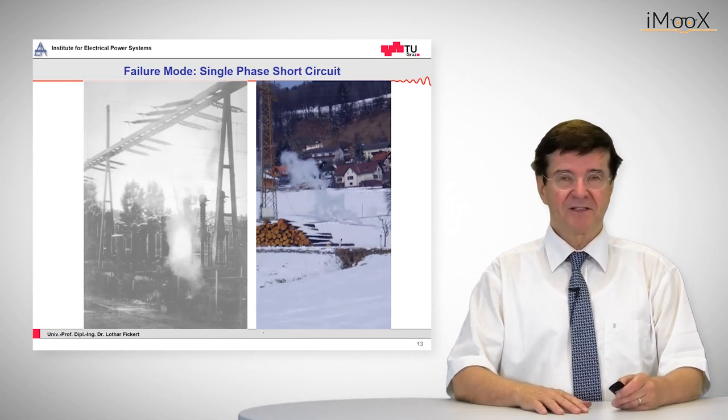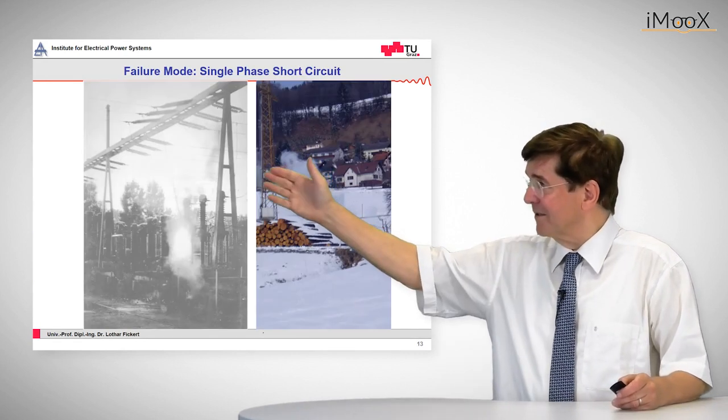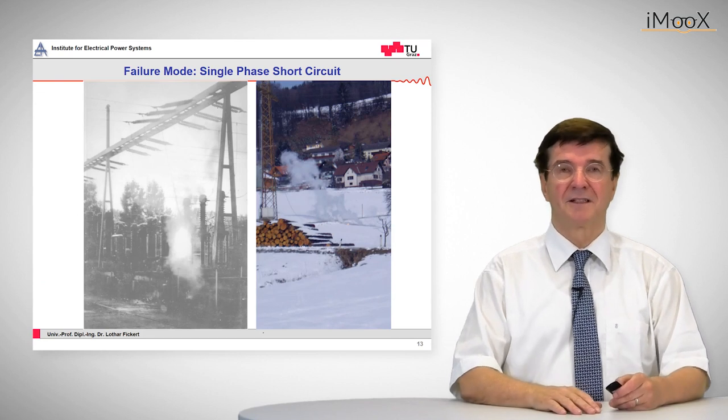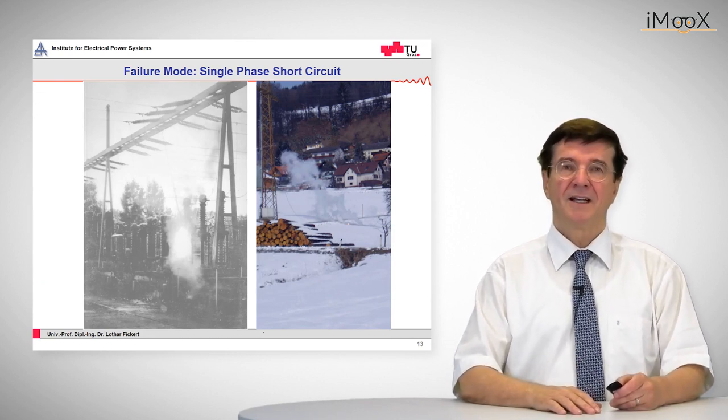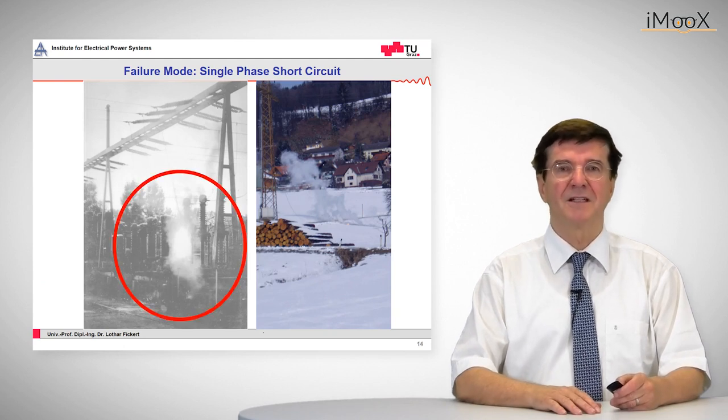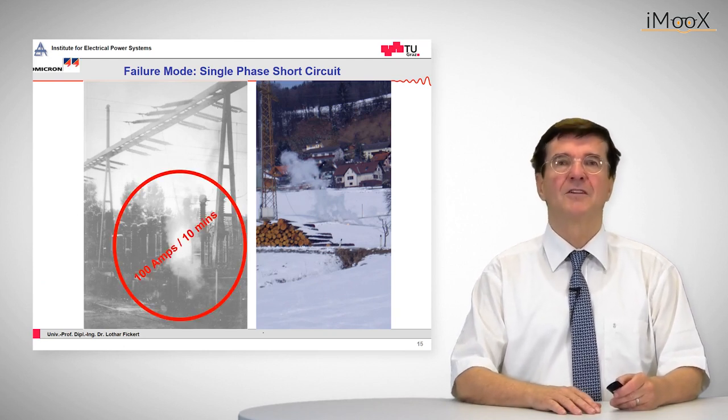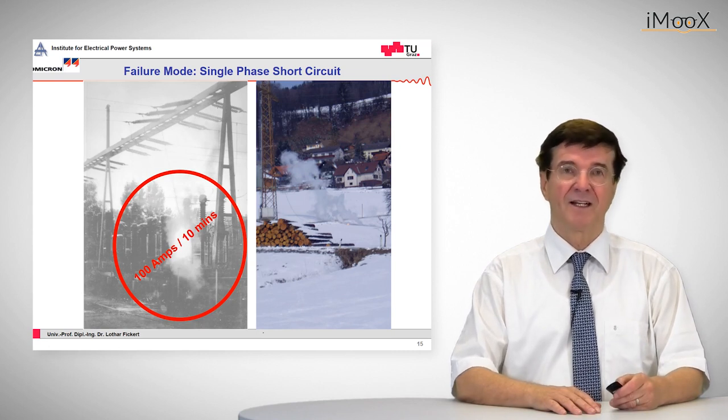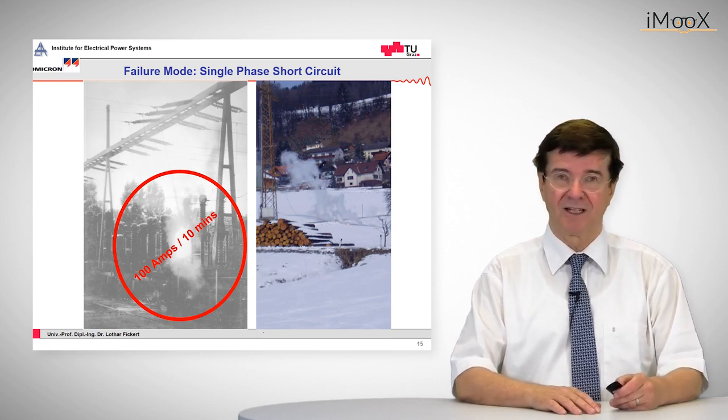So let's see some pictures. To our left side we see the picture of an arc that burns in a 110 kV substation and the story is that it has burned for approximately 10 minutes already until it was photographed and this was with a current of approximately 100 amps.